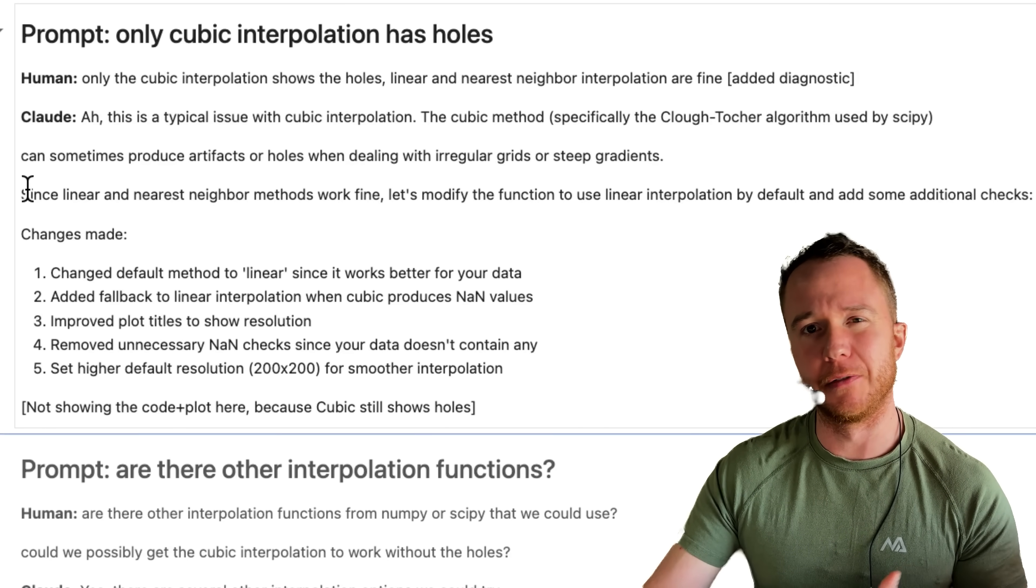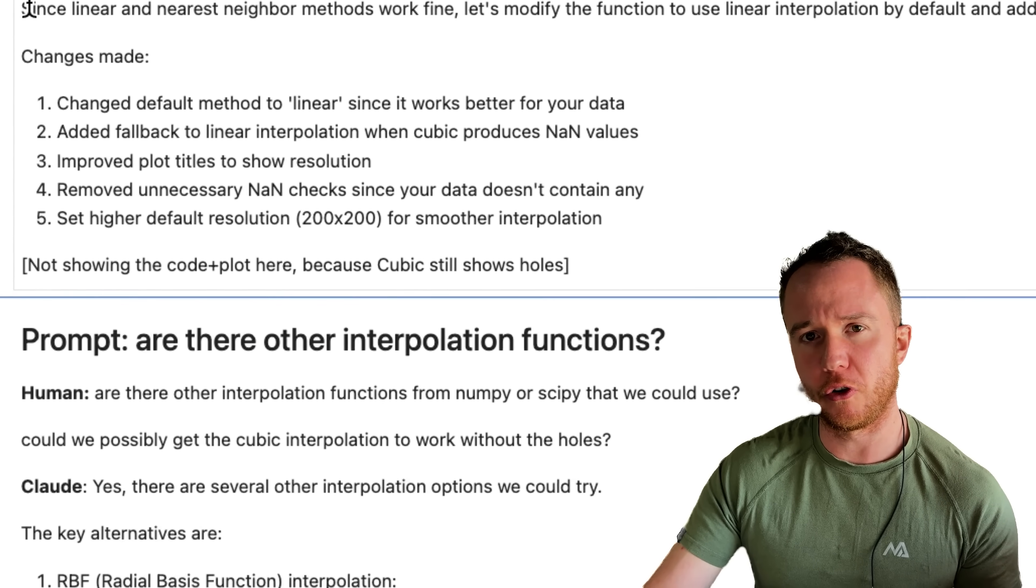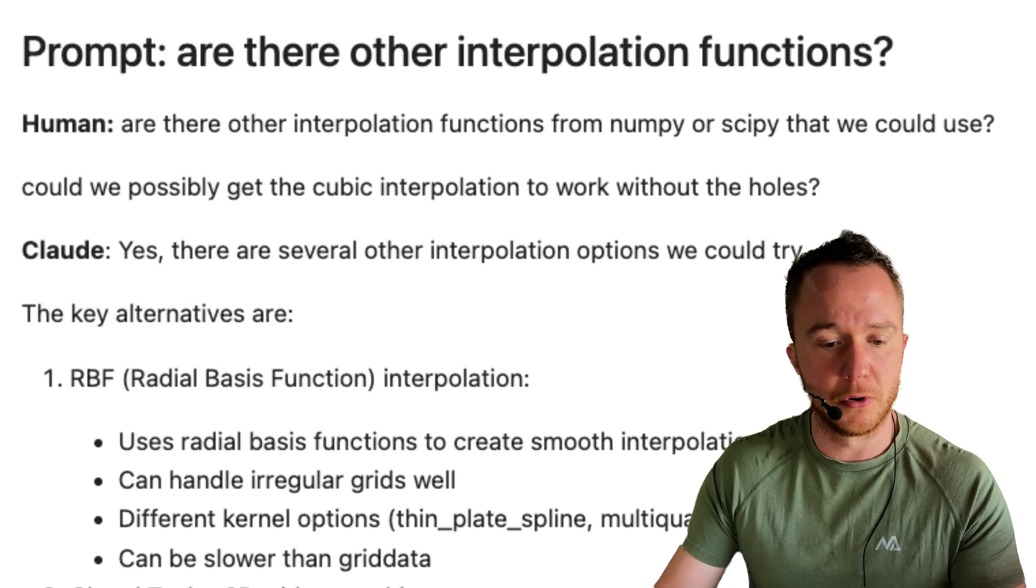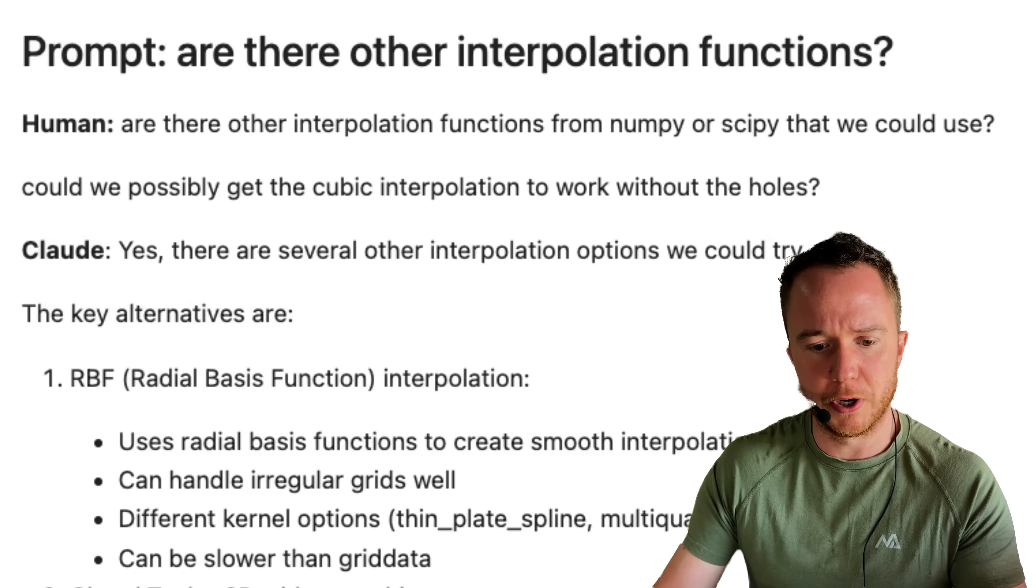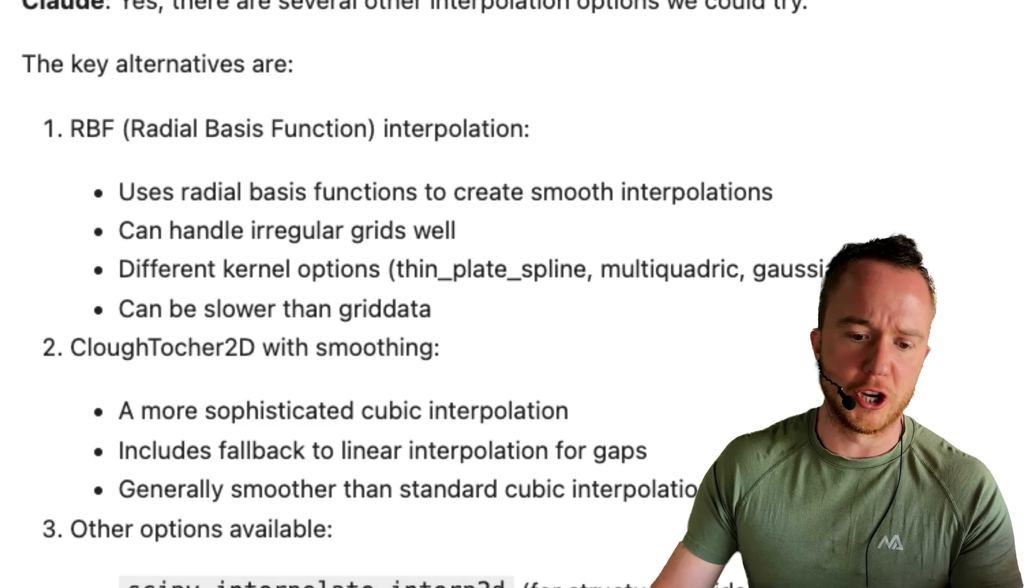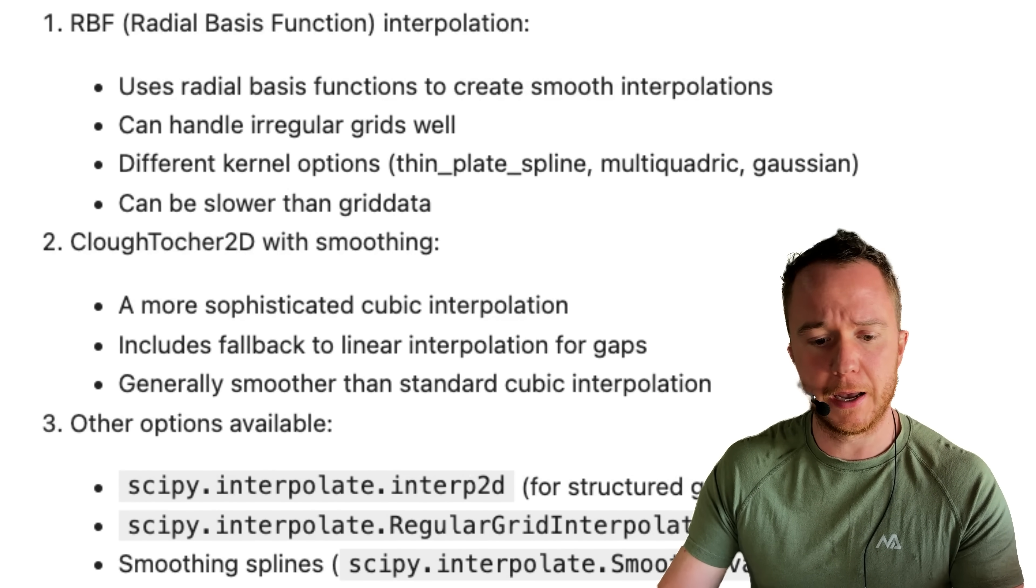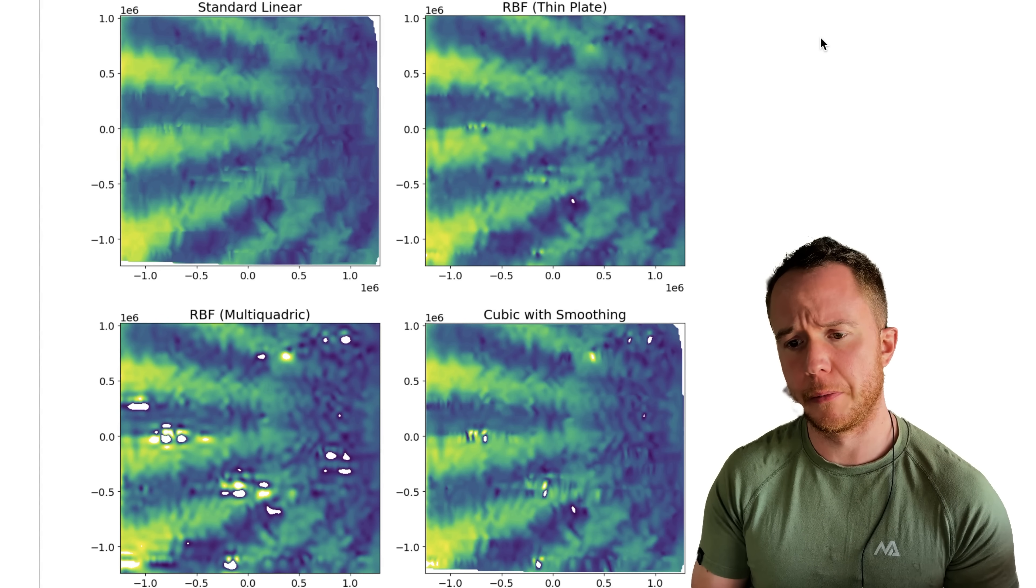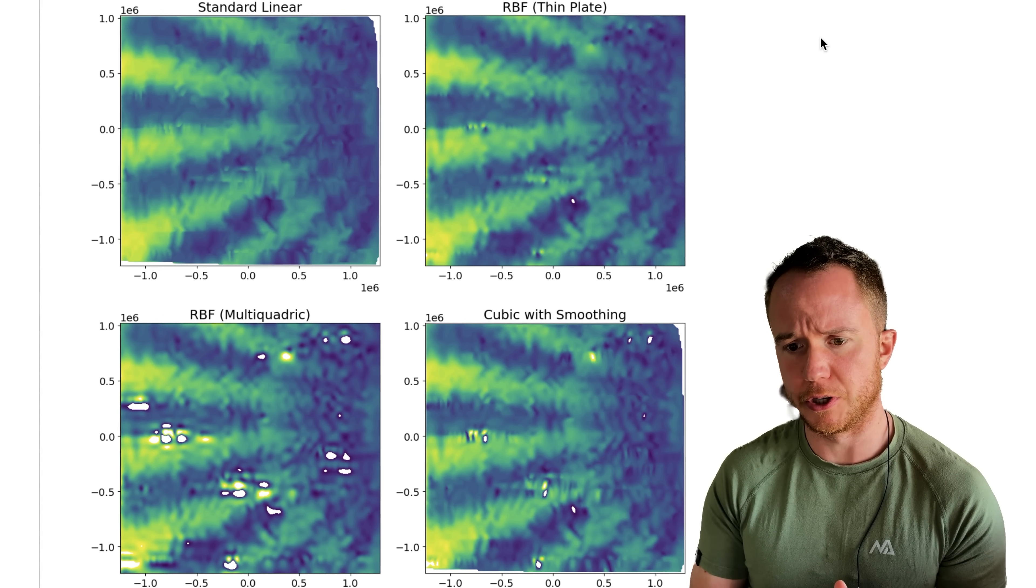Next step, I asked it if there are other interpolation methods that we could try to maybe get the cubic interpolation to work, and it will tell us that there are different options, so we can use RBF, so radial basis function interpolation, Clough-Tocher, so the one that we already had, but with smoothing added, and some other options. The radial basis function thin plate algorithm is actually a lot better than the cubic interpolation that we had before, but also here we still see a hole.